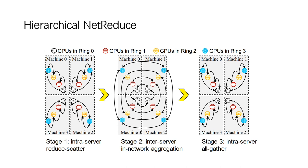The NetReduce protocol provides the flexibility for a job to build multiple parallel rings to saturate the bandwidth.